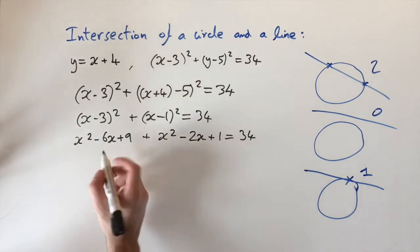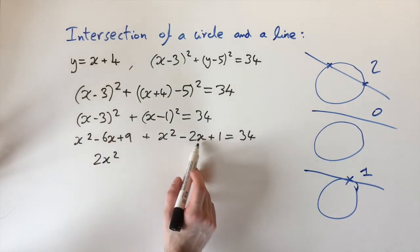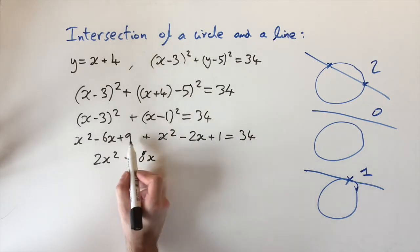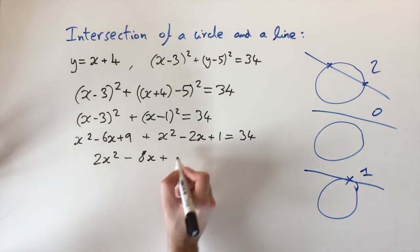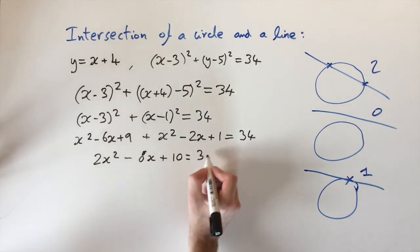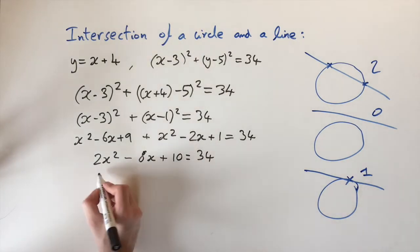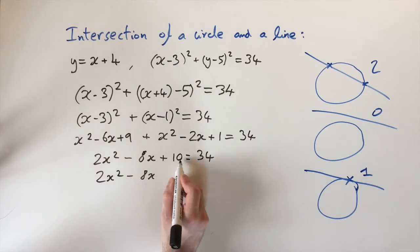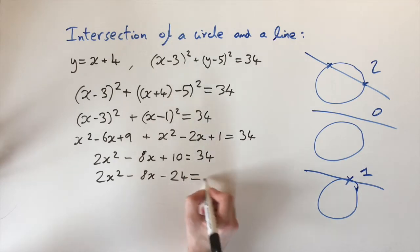Now we collect terms. We have 2x squared terms, giving 2x squared. For the x terms, we have minus 6x and minus 2x, giving minus 8x. And the constants: 9 plus 1 is 10, so plus 10. This still equals 34. Then we get everything onto one side by subtracting 34, giving 2x squared minus 8x plus 10 minus 34, which is minus 24, equals 0.